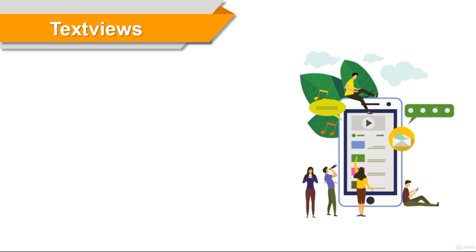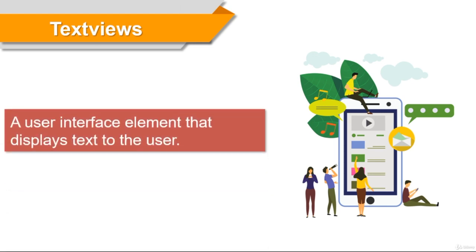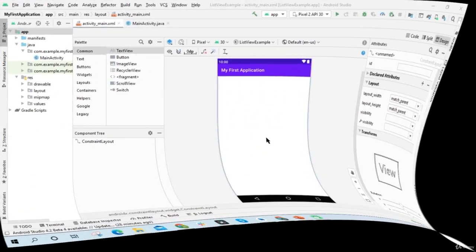Hello everyone, it's time to talk about text views in this video. We spoke about components in Android Studio in the last video. We mentioned some layouts, and right now we're going to talk about which Android components to place on these layouts. One of them is text view. Text view is a component to show text to the users. You can use text views as labels, to print results on the screen, or to print notifications. Text views can be used in a lot of different areas, so it's pretty much the most commonly used component. We'll go back to Android Studio and have a look at how text views work in practice.